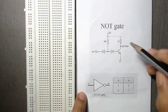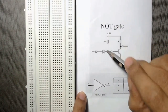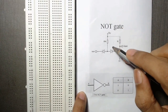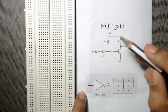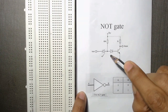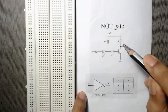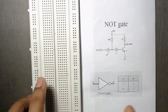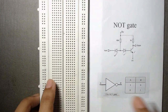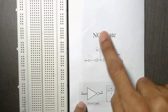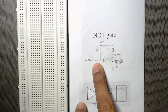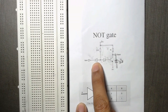Hello friends, in this video we will learn the working of a NOR gate implemented by using two diodes and a simple transistor, and we will implement it on a breadboard. Here is the circuit diagram of a NOR gate using two diodes and a transistor.